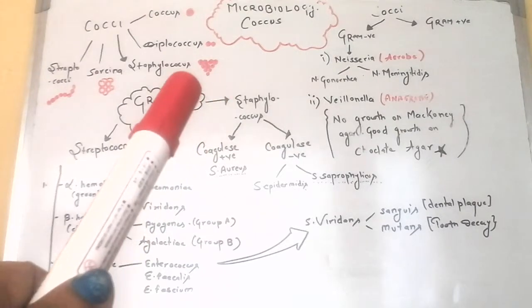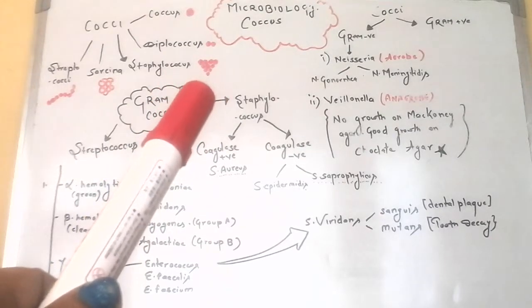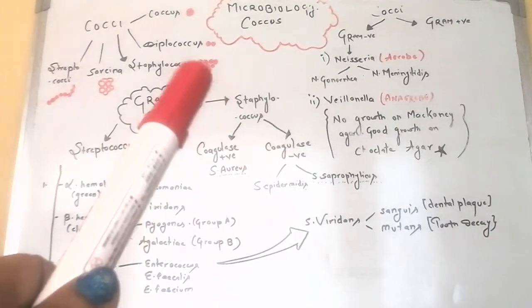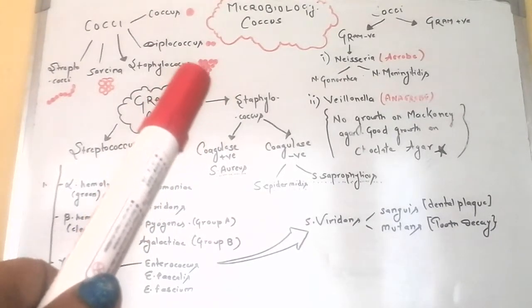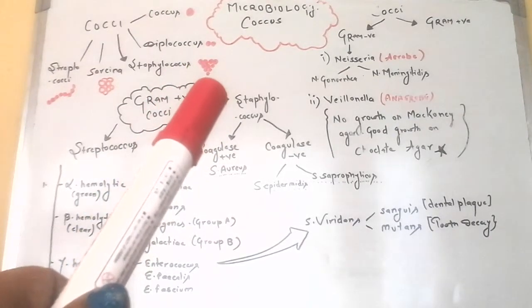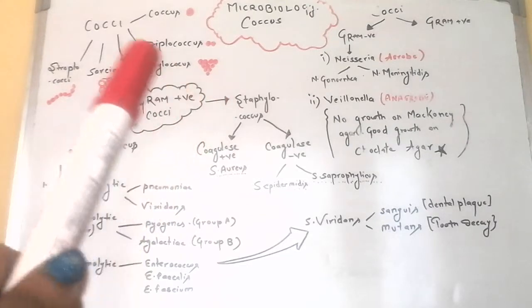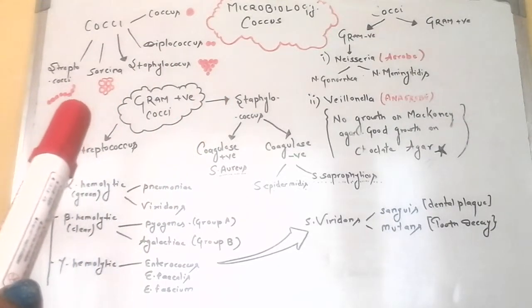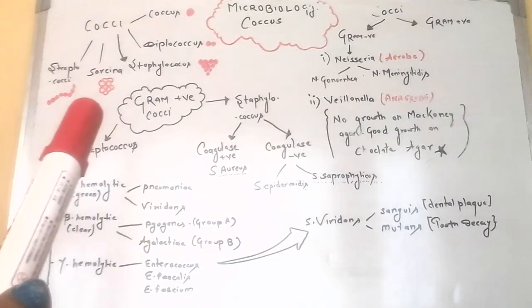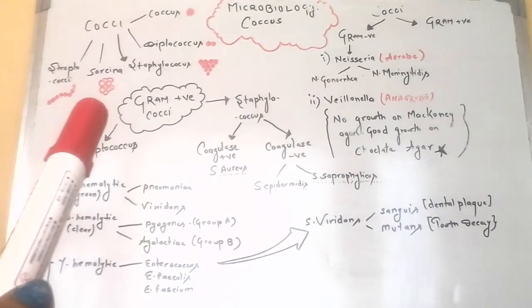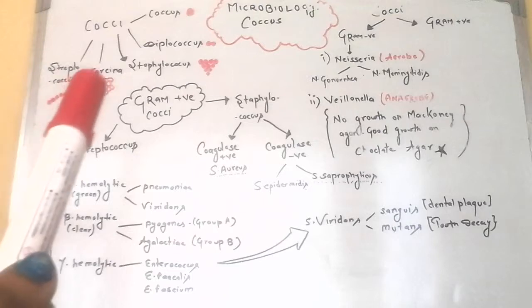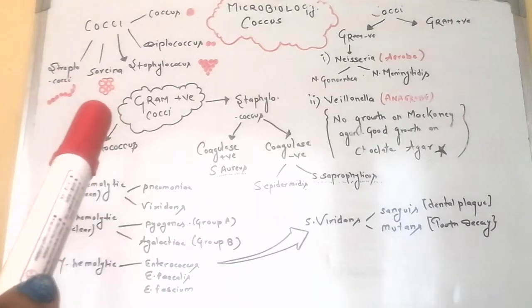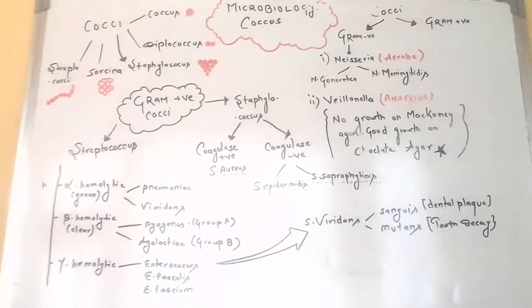Staphylococcus shows a grape-like structure forming a specific pattern. Streptococci are simply the chain-like structures of cocci.